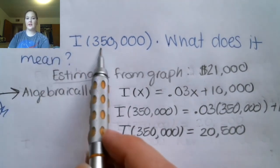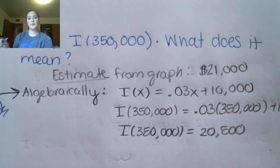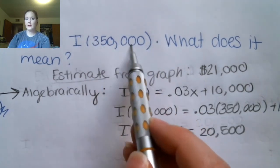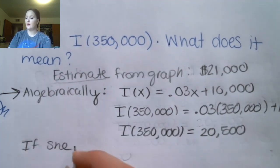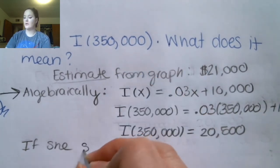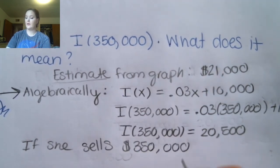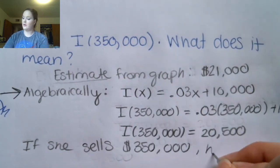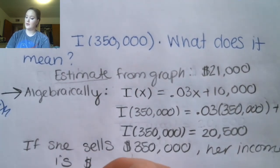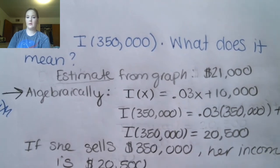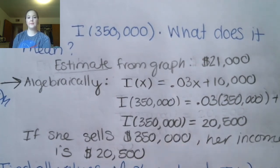So what does I(350,000) = 20,500 mean? Make sure you answer both parts. The input value — she sells $350,000 worth of real estate. The output value — her income is $20,500. Explain the input of $350,000 and explain the output.